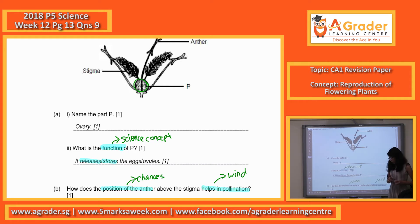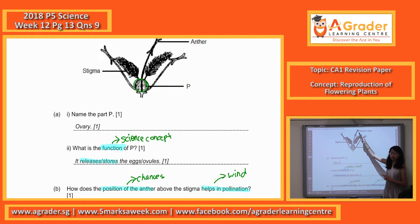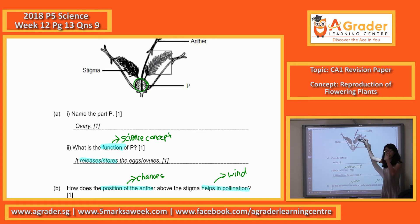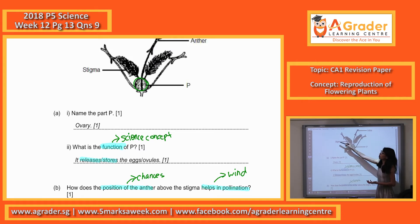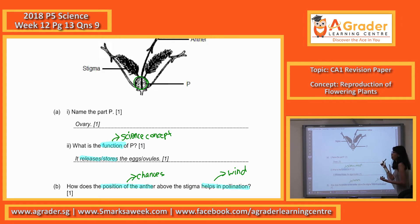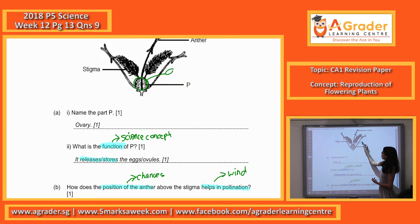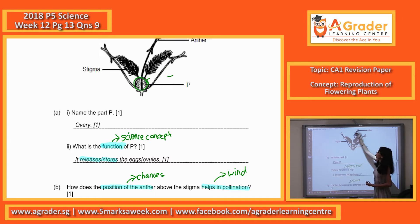Why must the anther be above the stigma? There are higher chances of pollination. When the wind blows, the pollen gets transferred. It can either fall onto the stigma and go through self-pollination, or the wind can blow against the anther easily because it's sticking out, so it can be transferred further away onto other flowers as well. If the anther is lower, it will not even fall onto the stigma at all when wind blows. If it's higher, there are chances that the pollen grain might fall onto the stigma.